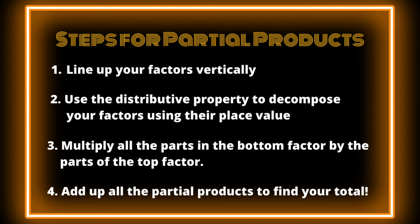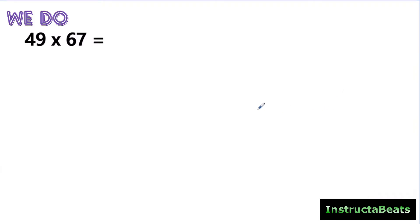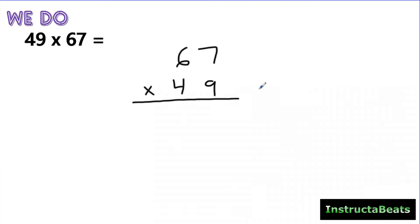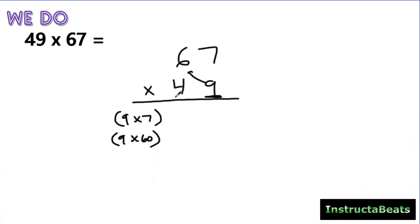Let's take a look at a WeDo problem. Here we have 49 times 67. I'm going to use the commutative property to put my bigger number on top and do 67 times 49. If we had an array, we'd have 67 groups of 49 in each, and we want to split that apart into smaller arrays. It doesn't matter which order you multiply as long as you multiply all the digits in the bottom by all the digits in the top. I'll start with the ones place: 9 groups of 7, then 9 groups of 60, then 40 groups of 7, and 40 groups of 60.